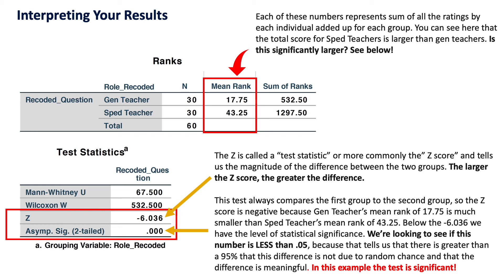There are other tables in the output, but we don't need those — ignore them and focus only on the Ranks and Test Statistics tables. In the Ranks table, look for the column that says Mean Rank. Each of these numbers represents the sum of all the ratings by an individual, added up for each group.